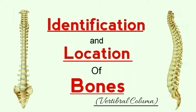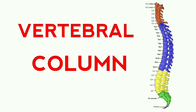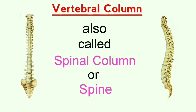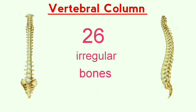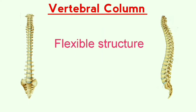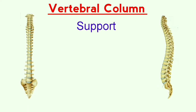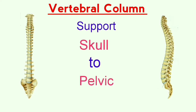Today we are going to explain the topic vertebral column. The vertebral column is also called the spinal column or simply the spine. It is comprised of 26 irregular bones that come together to form a flexible structure in a curved S-shape, as you can see in the figure. This spinal column supports the body from the skull to the pelvis.